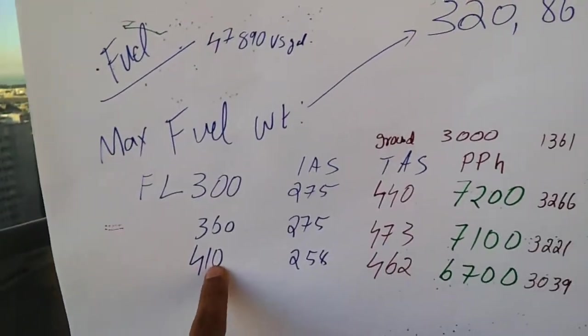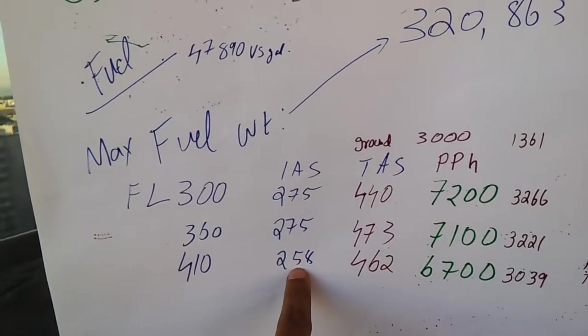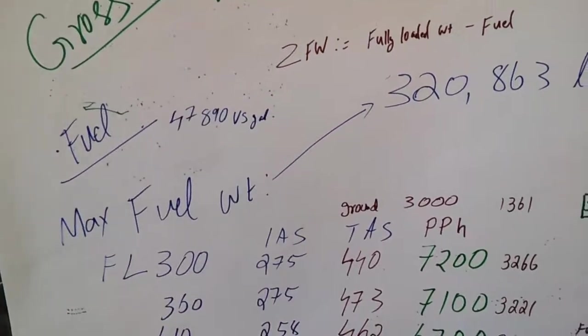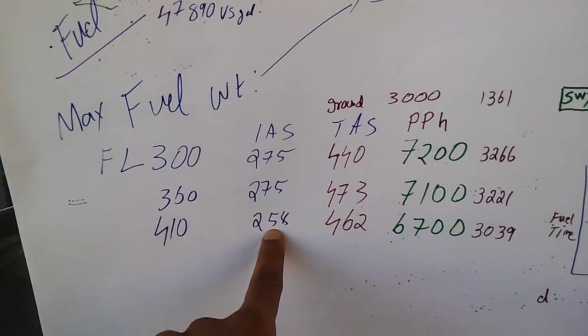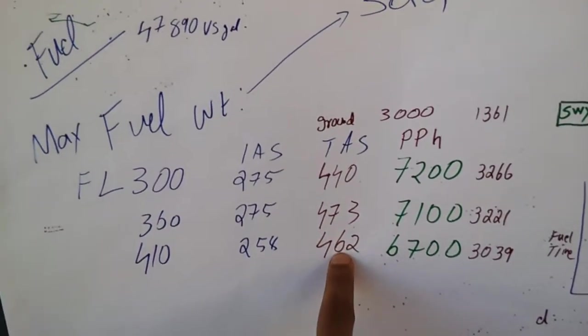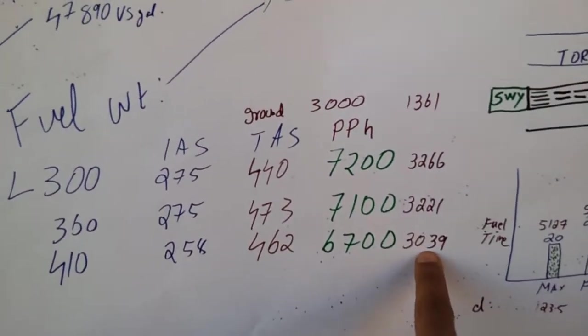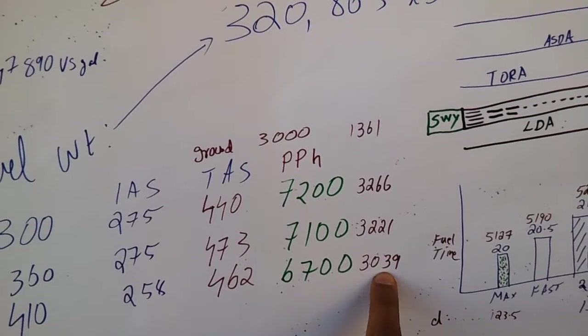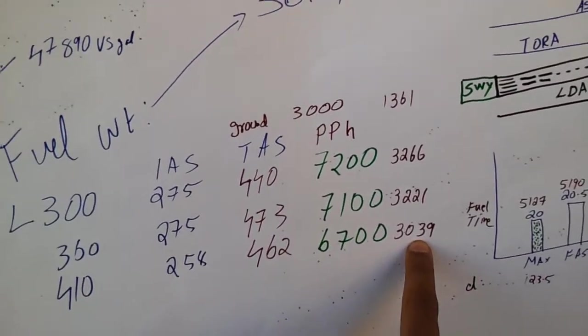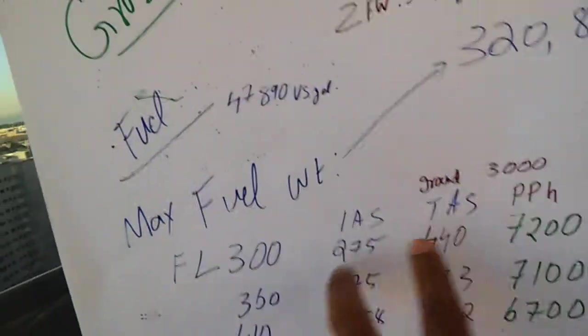At fly level 410, you have around approximately 258 and true airspeed of 462, and it burns about 3,390 kg per hour. How do we get this calculation?